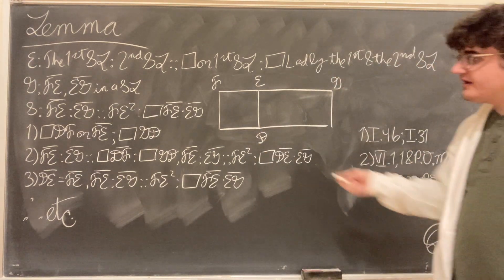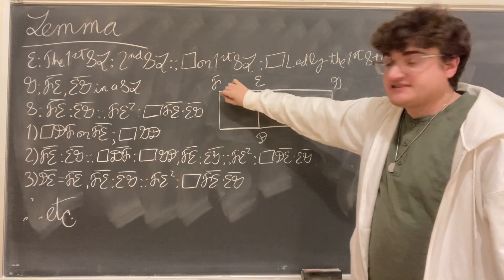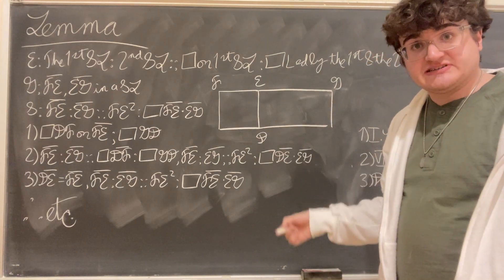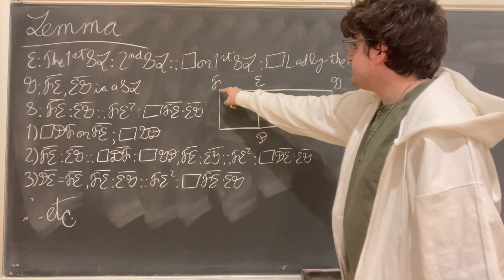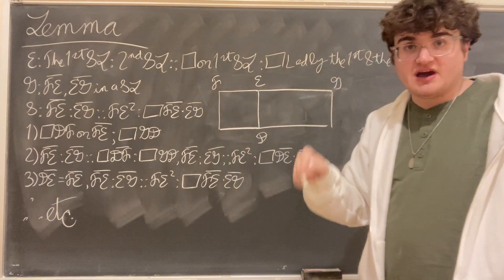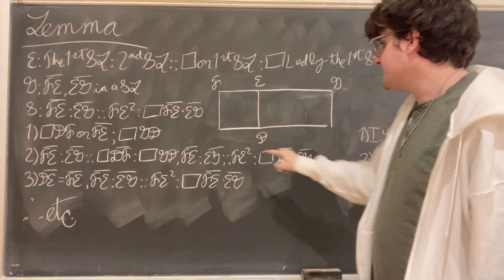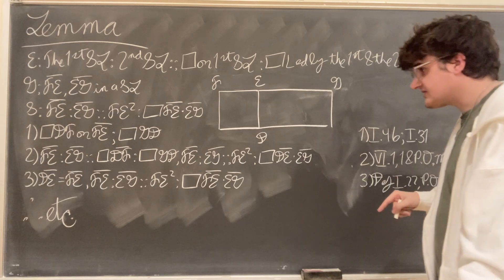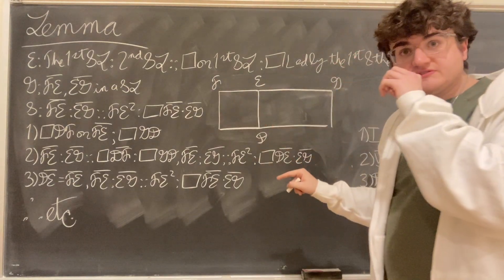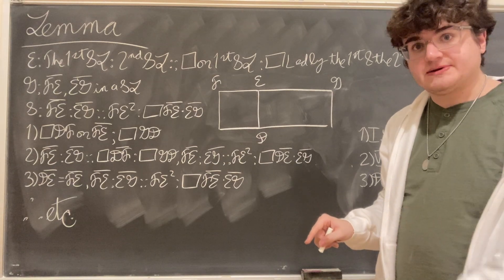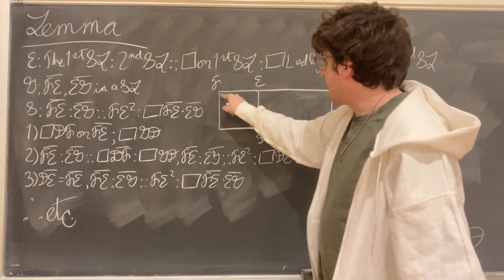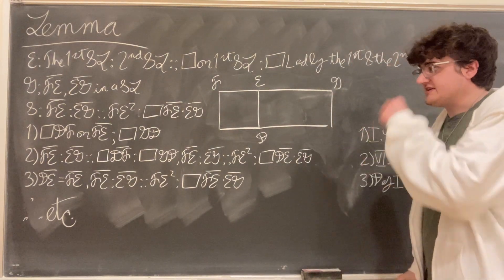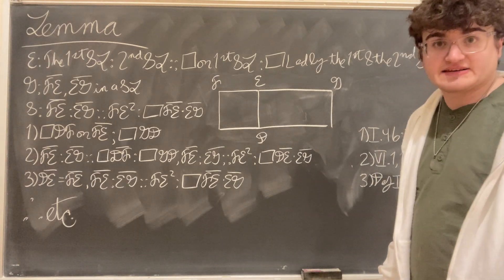Now, because FE is to EG just as the square FD is to the rectangle GD — we know this by Proposition 6.1, since the square FD and rectangle GD are parallelograms under the same height, because the bottom line is parallel to FEG by construction, and so these parallelograms under the same height are to each other as their bases — the base of parallelogram DF is FE and the base of rectangle GD is EG. So FE is to EG just as the square DF is to the rectangle GD.